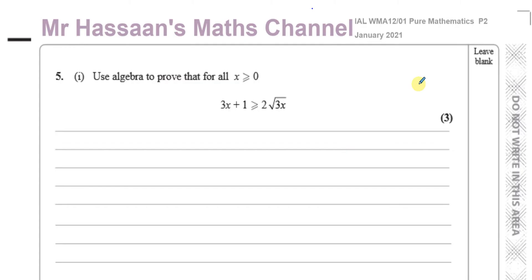We have to prove, for all x ≥ 0, that 3x + 1 is greater than or equal to 2√(3x). I want to mention first why they're specifying that x ≥ 0. Basically they're saying x is going to be zero or positive.